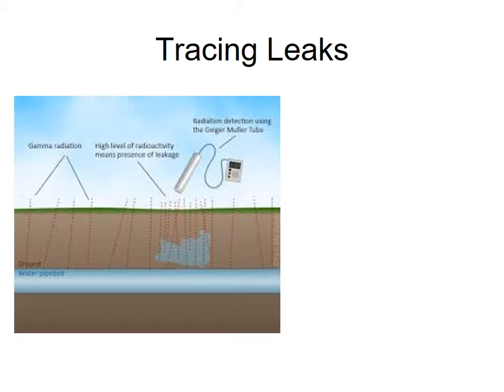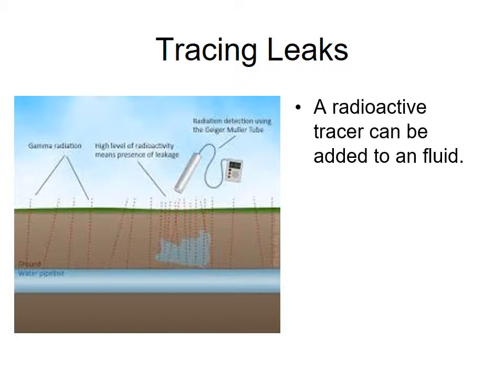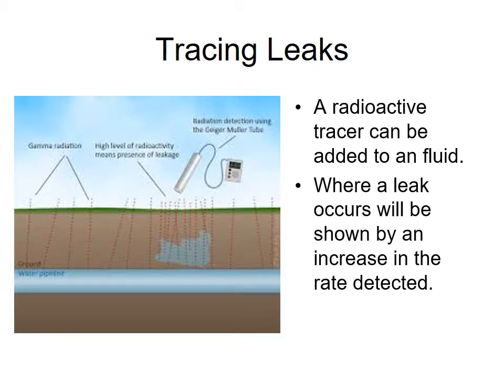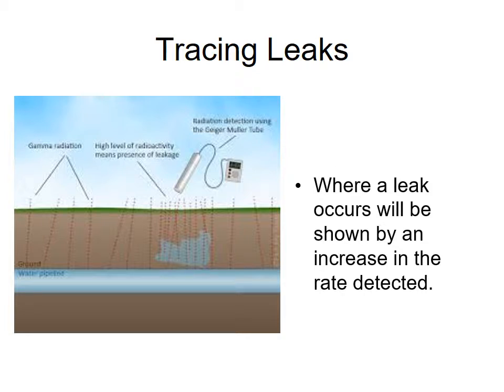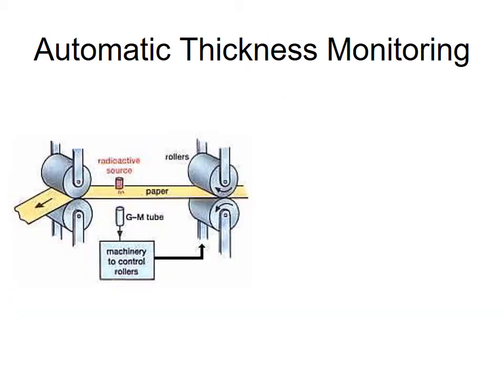Another practical application outside of medicine is tracing leaks. You can put a radioactive tracer through a fluid in a pipe, and when a leak occurs, you can use a Geiger-Müller counter to see on the surface where there is the highest radiation. In terms of the kind of isotopes you want to use, you want ones that emit gamma radiation in order to go through the soil.